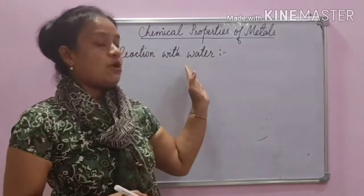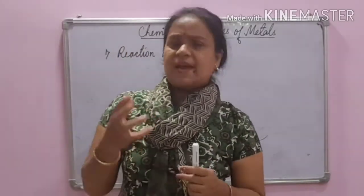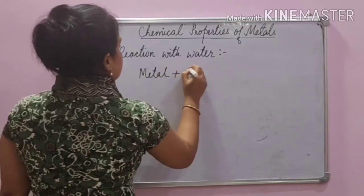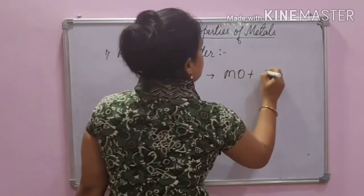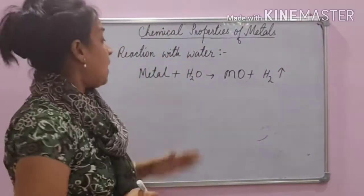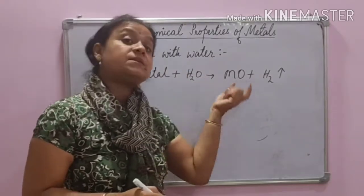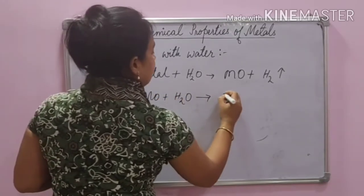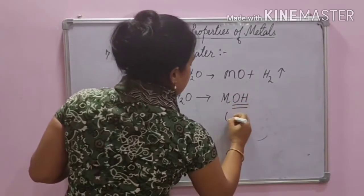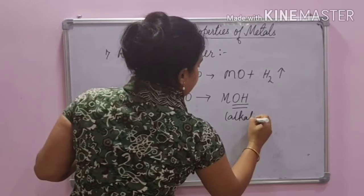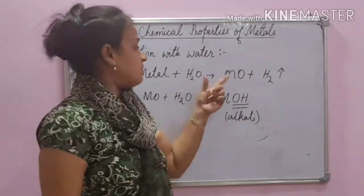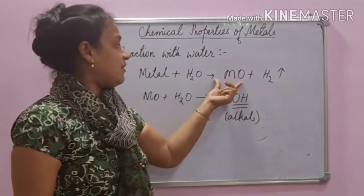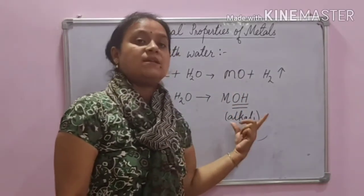Now let us see the reaction of metals with water. Whenever any metal reacts with water, it forms metal oxide and hydrogen gas. But if this metal oxide is soluble in water, the reaction further proceeds — metal oxide and water form metal hydroxide, which are alkalis.